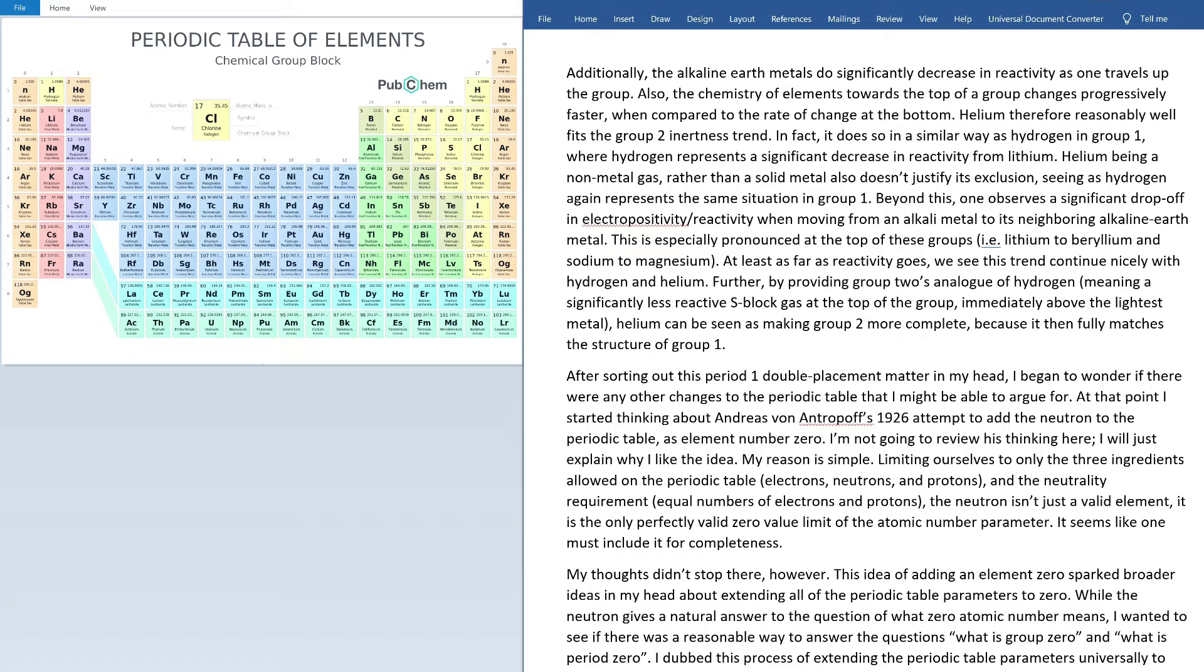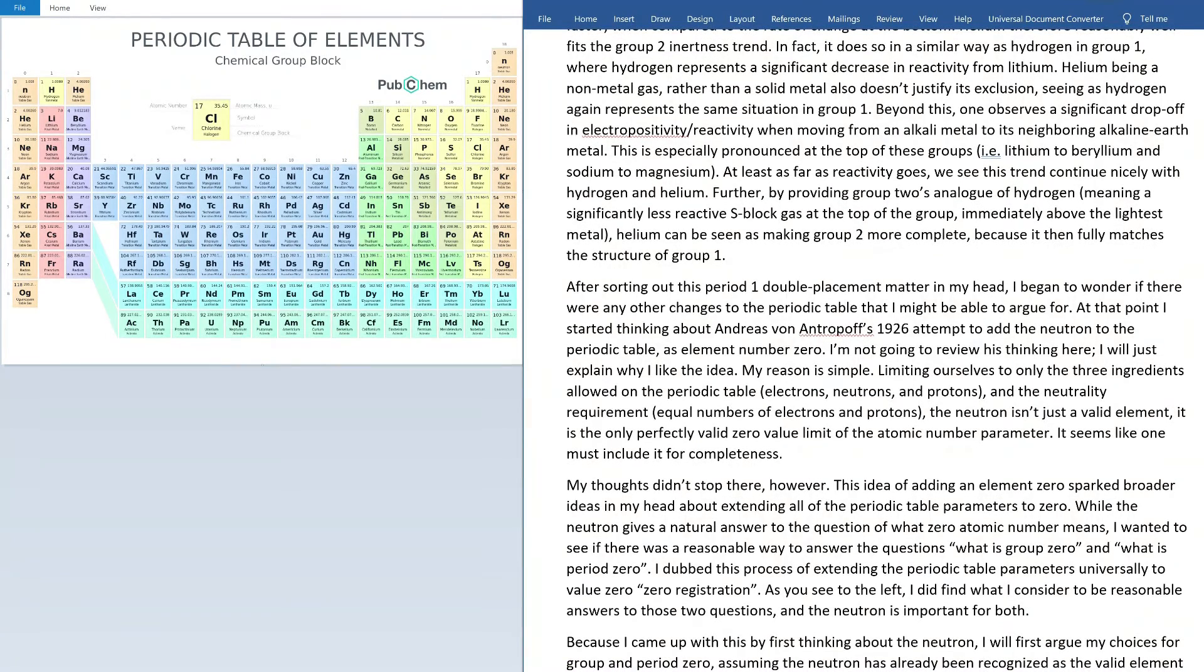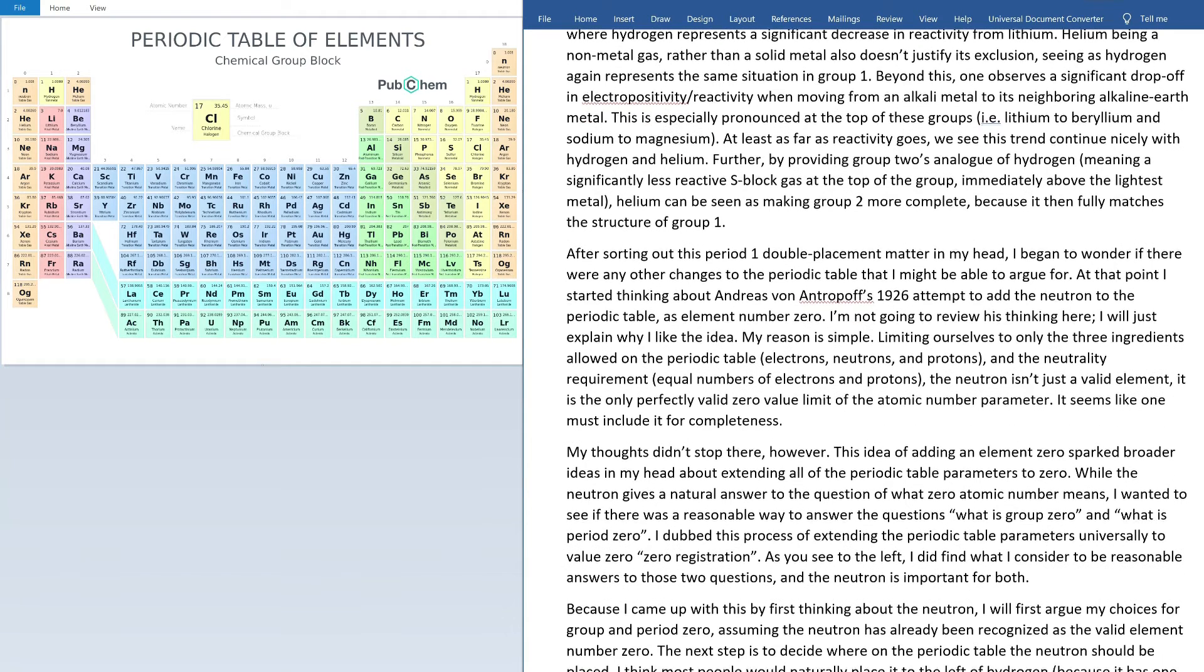Further, by providing group two's analog of hydrogen, meaning a significantly less reactive S-block gas at the top of the group immediately above the lightest metal in that group, helium can be seen as making group two more complete because it then fully matches the structure of group one. Placing helium at the top of group two in addition to its usual place in the noble gases also avoids a sort of incomplete S-block where it's missing its upper right corner. After sorting out this period one double placement matter in my head, I began to wonder if there were any other changes to the periodic table that I might be able to argue for.